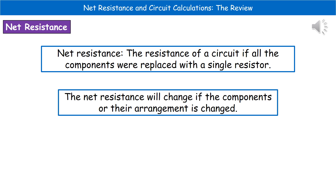The net resistance is the resistance of that circuit at that point. Whatever calculation we've come up with as the net resistance will actually change if we were to change the arrangement of our components or the components themselves.